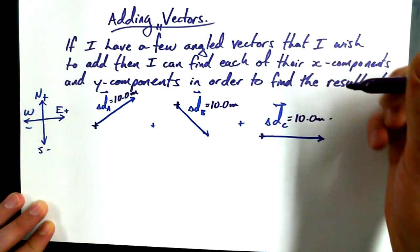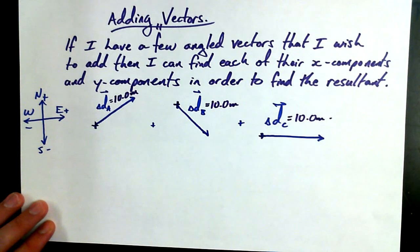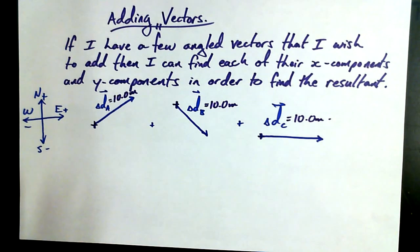And this should also sort of highlight the fact that three displacement vectors all with a magnitude of 10 should never add up to 30 unless they all happen to be going in the same direction, right? The answer is not going to be 30 if we go find the resultant here. That's gobbledygook.